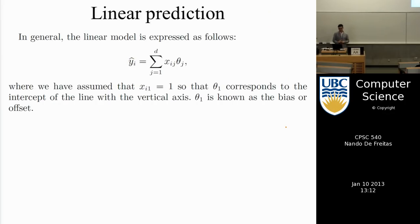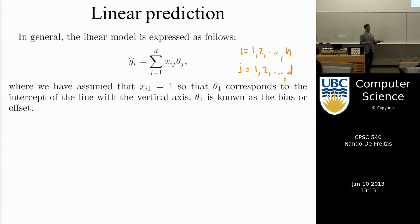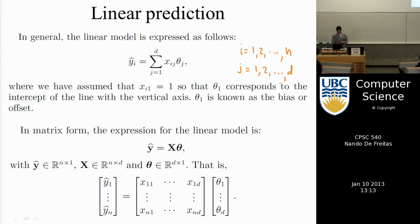We have several data points, where i is an index going from 1 to N, and j is the index over the input features. Throughout the course, i indexes data instances and N is the total number in the training set, while j indexes features. For example, in energy prediction with D=2, j=1 corresponds to wind speed and j=2 to the number of people.